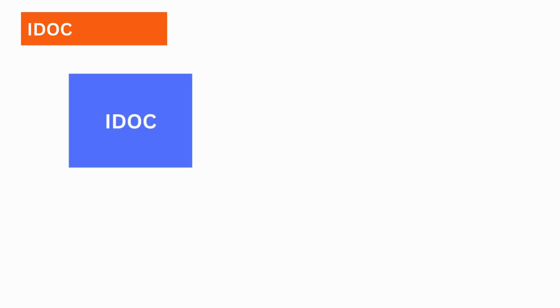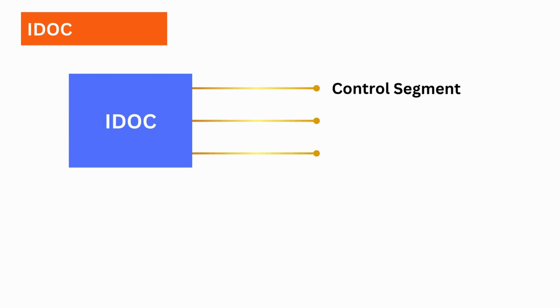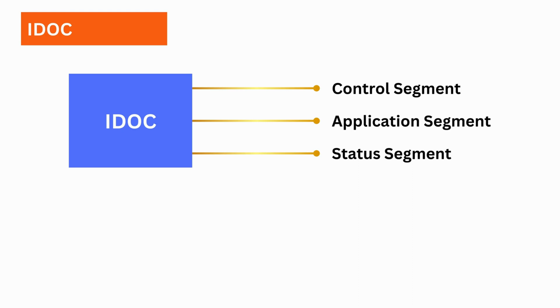An IDOC contains three main segments: a control segment containing the control information for message routing, an application segment containing application data, and a status segment for keeping track of IDOC processing status.